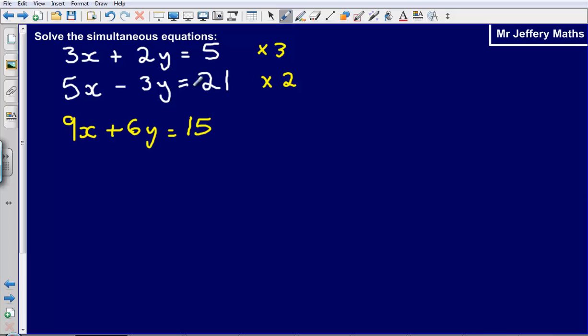And then I am multiplying this bottom equation here by 2 so what I end up with is 10x minus 6y and that is equal to 42.